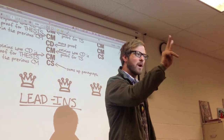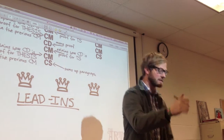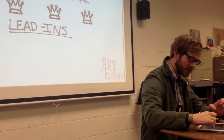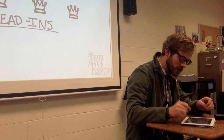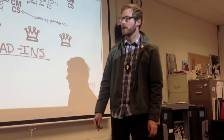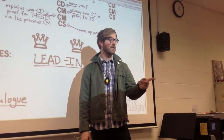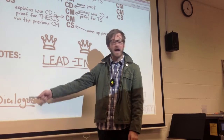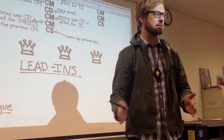There are two types of quotes you're going to use as proof for your topic sentence. The first type of quote you're going to use is dialogue. These are quotes that are actually spoken by characters. So dialogue is one type of quote you'll use as evidence of your topic sentence.